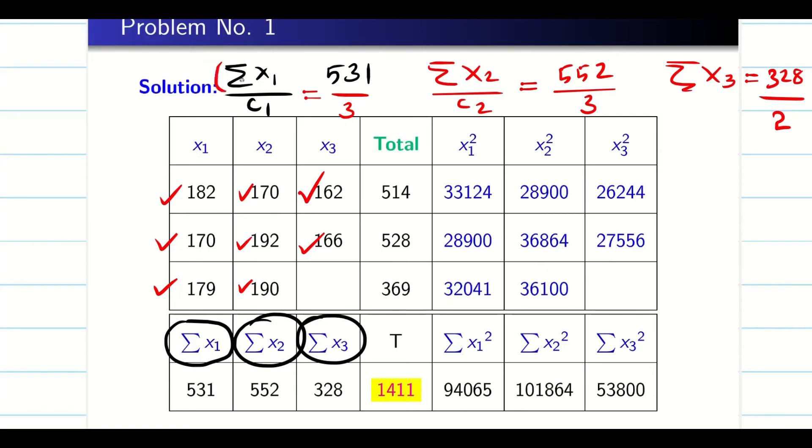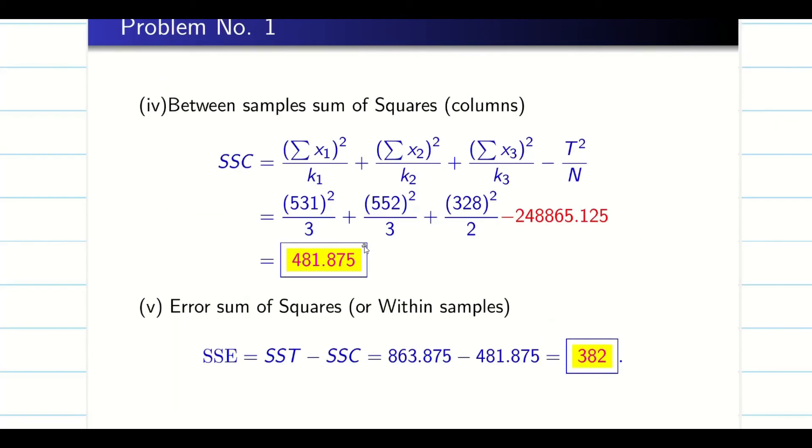Now the formula says summation X₁ whole square. So I have to square this. Summation X₂ whole square. Similarly, summation X₃ whole square. Now you can square with your calculator. Now we will go to the formula there. Now see here, summation X₁ square by c₁, c₂, c₃. We can keep for our very easy notation. So now you calculate and subtract with the correction factor. So you will be getting SSC. As I said, SSE error is going to be SST minus SSC. You will get all the values.